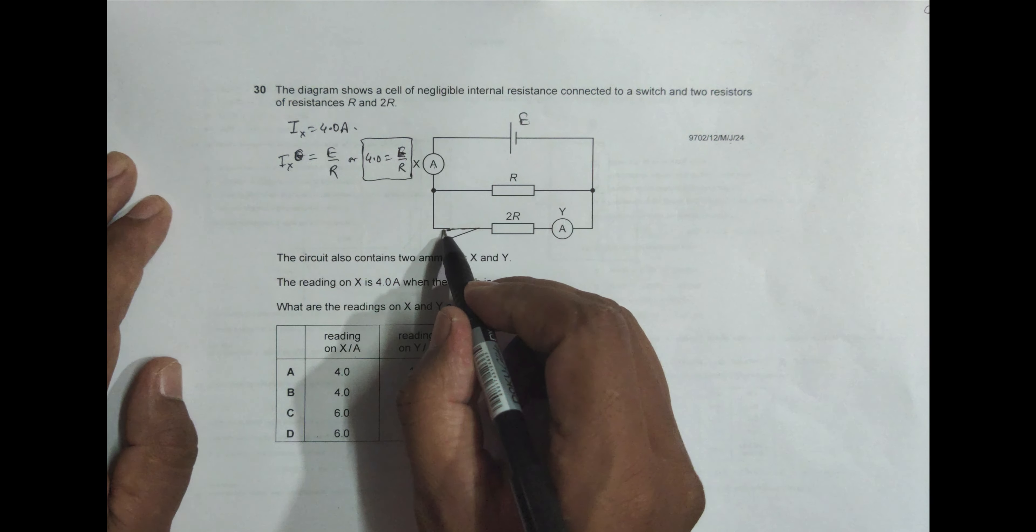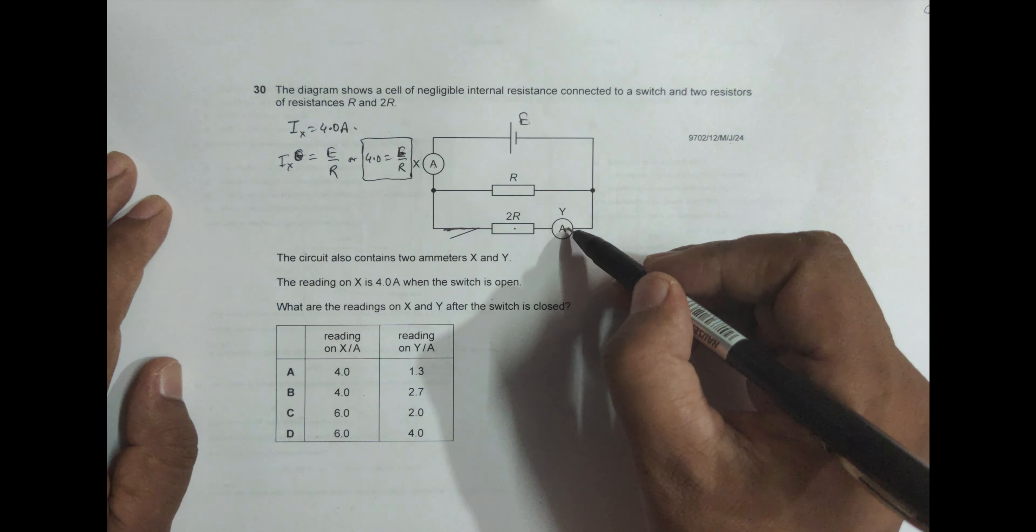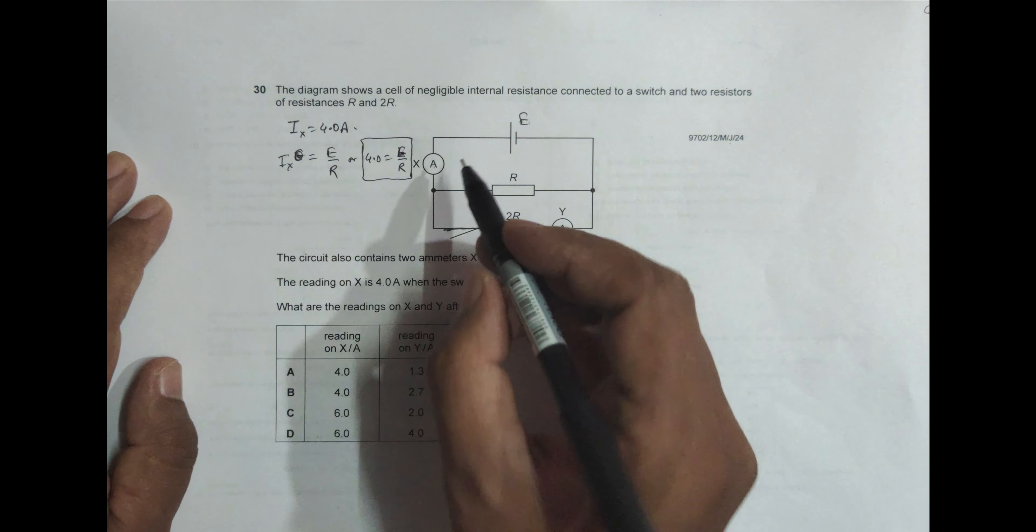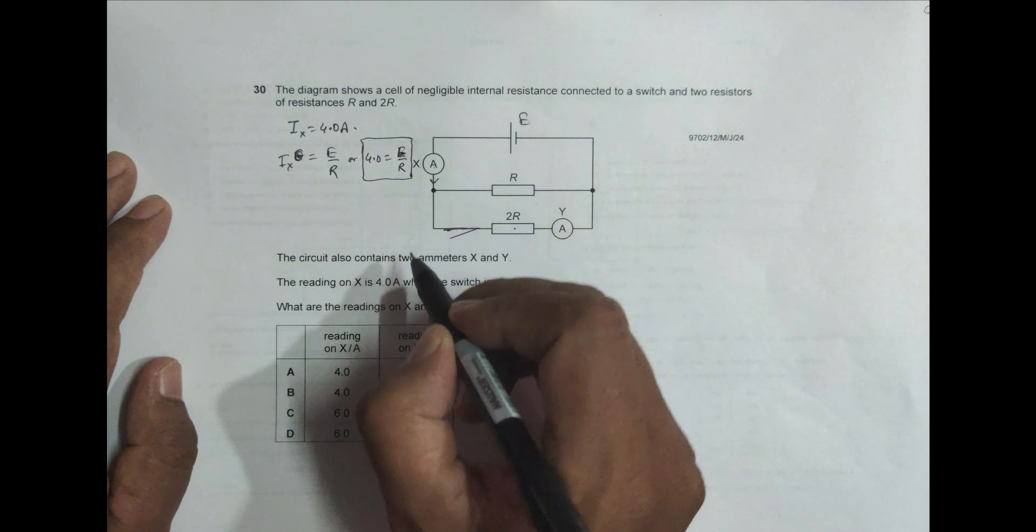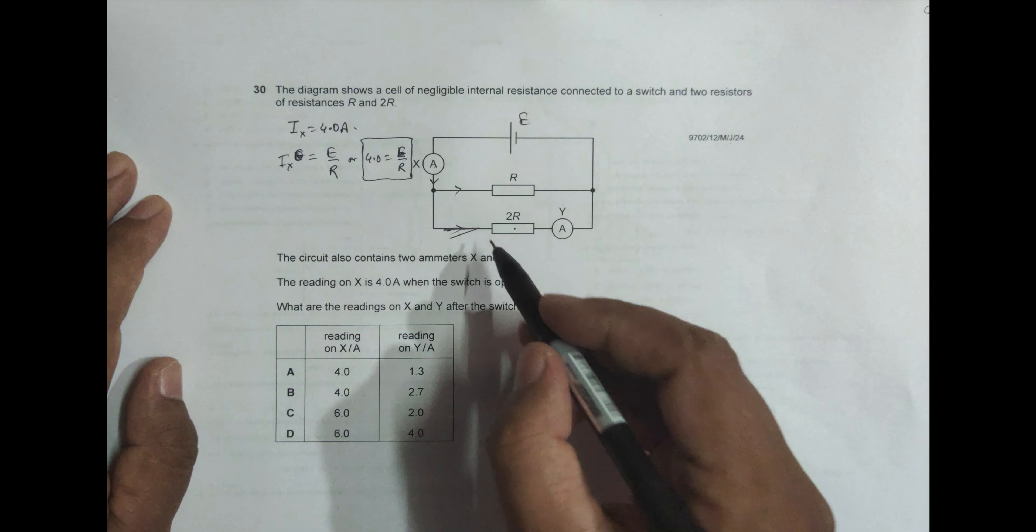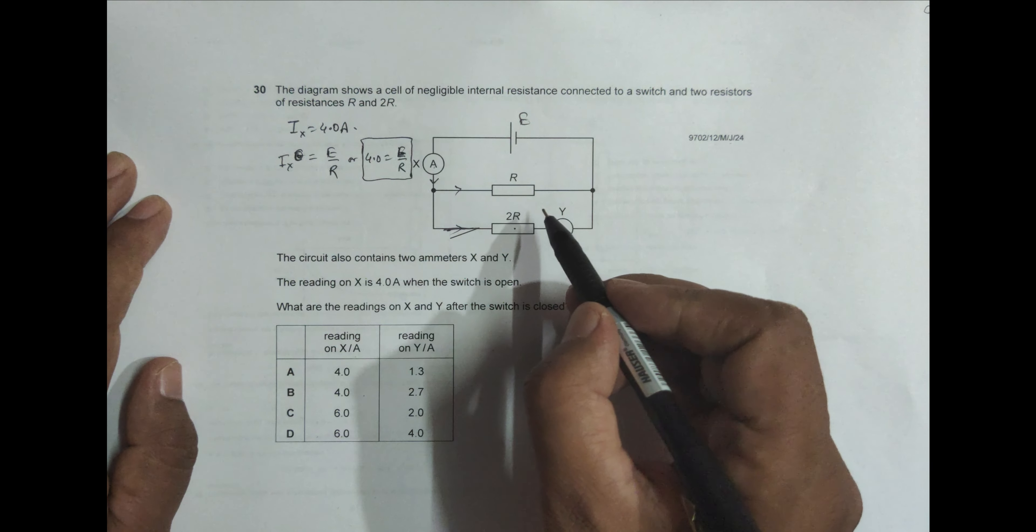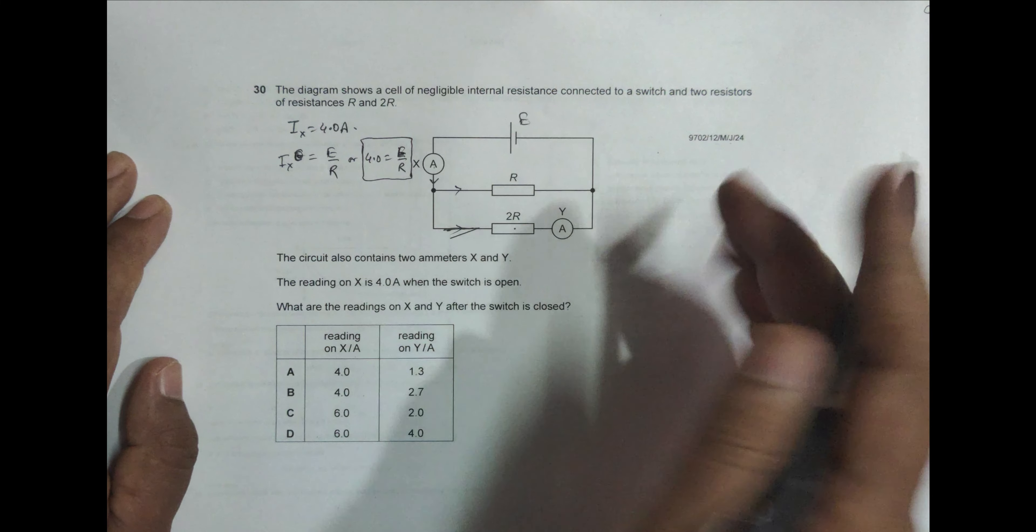Now we connect the switch. So when you connect the switch, this 2R also comes into effect and this ammeter also comes into the picture. So first what happens is current comes up to here then it divides, and when it divides the value of current here will be... let's do it later.